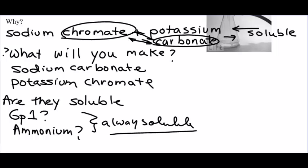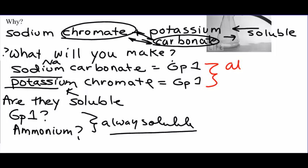So if you look at this, you may notice sodium is Na. That's in group one. And potassium is K. That's in group one. And why that's important is we just made our life really easy. If you are in group one, you're always soluble. So sodium carbonate soluble, potassium chromate soluble, you're not making anything insoluble. You're only going to have soluble substances.